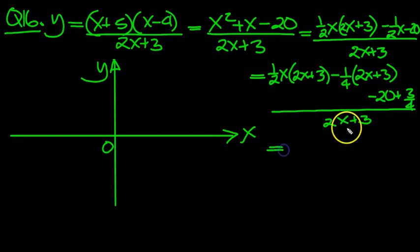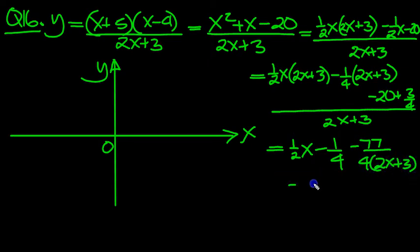So this is equal to then, now we can split the fraction up nice and easily. The first part is this over the denominator, so we just get half x. The second part is just this over the denominator, so we get the minus quarter. And then the last part, 20 as quarters is minus 80 quarters, plus 3 quarters is minus 77 over 4. And we've still got a 2x plus 3 here. So this is what we're dealing with here.